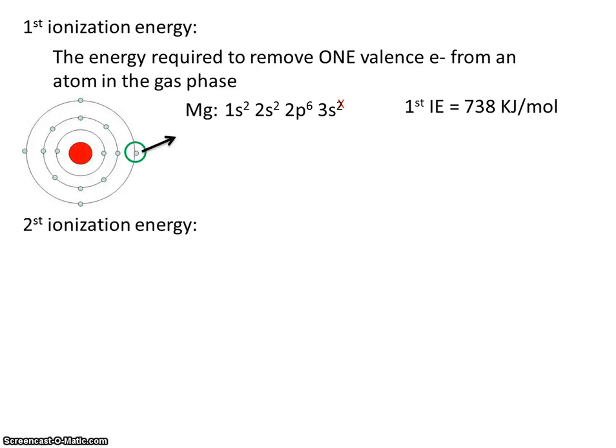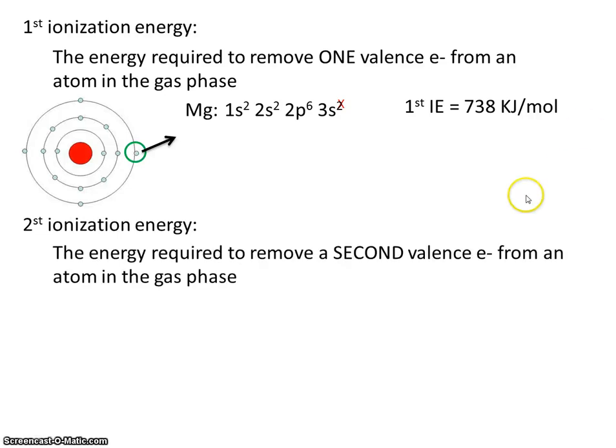Let's look at second ionization energy. You guessed it. It's the amount of energy required to remove a second valence electron from an atom in the gas phase. So once again, here's the electron configuration for magnesium. Now if we want to remove two of those electrons, not surprisingly, it takes about twice as much energy.